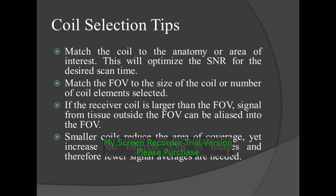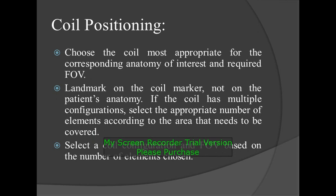Coil selection tips: match the coil to the anatomy or area of interest — this will optimize the SNR for the desired scan time. Match the FOV to the size of the coil or the number of coil elements selected. If the receive coil is larger than the FOV, signals from tissues outside the FOV can be aliased into the FOV. Smaller coils reduce the area of coverage yet increase the inherent SNR of the image, and therefore fewer signal averages are needed. Coil positioning: choose the coil most appropriate for the corresponding anatomy of interest and required FOV. Landmark on the coil marker, not on the patient anatomy. If the coil has multiple configurations, select the appropriate number of elements according to the area that needs to be covered.